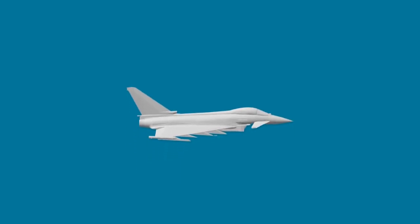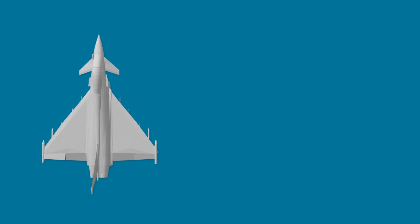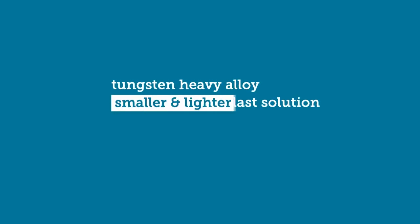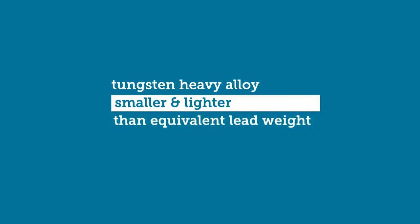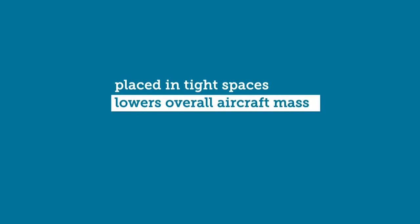This is very useful in aircraft ballast applications where a smaller, lighter weight can be placed further from the centre of gravity in the aircraft. Typically the ballast will need to be in the nose or tail section to be effective, where space is very restricted. This video demonstrates simply that using tungsten heavy alloy can provide a ballast solution that is both smaller and lighter than the equivalent lead weight, allowing it to be placed in tight spaces but crucially also lowering the overall aircraft mass.